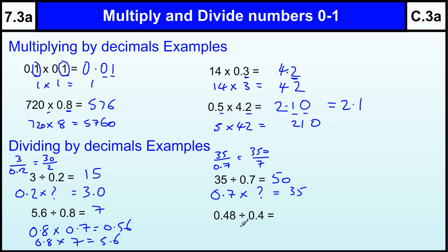Now, 0.48 divided by 0.4. 48 divided by 4 is 12, so 0.48 divided by 4 would be 0.12. But we want to divide by 0.4 which makes it bigger, so it becomes 1.2 because it's 10 times smaller you're dividing by, that means it goes 10 times as many times into, so that's 1.2.